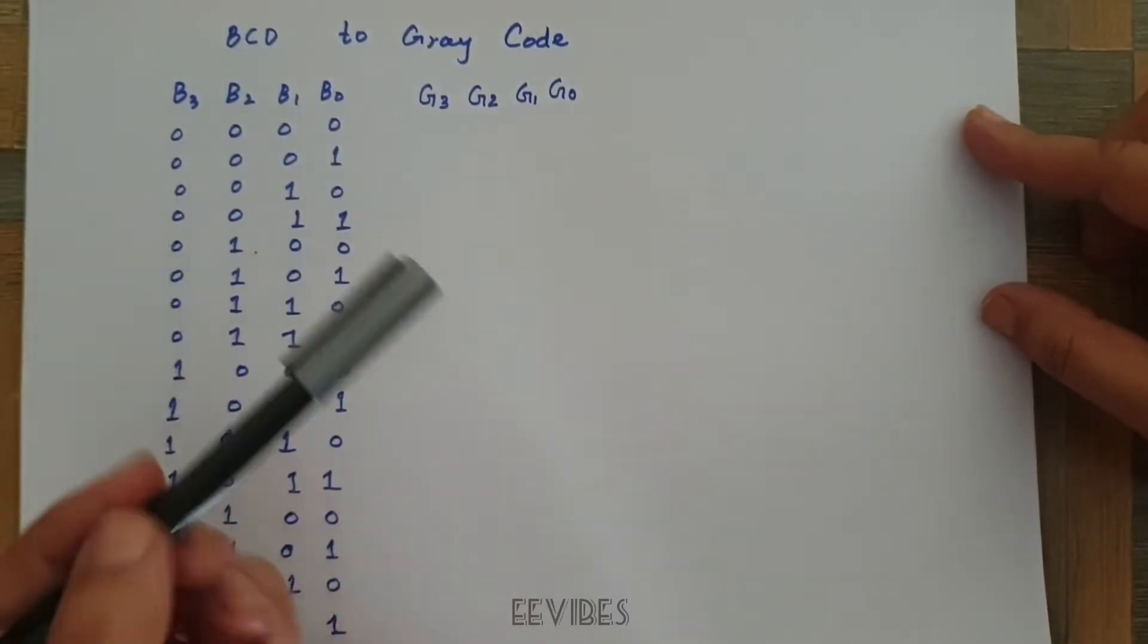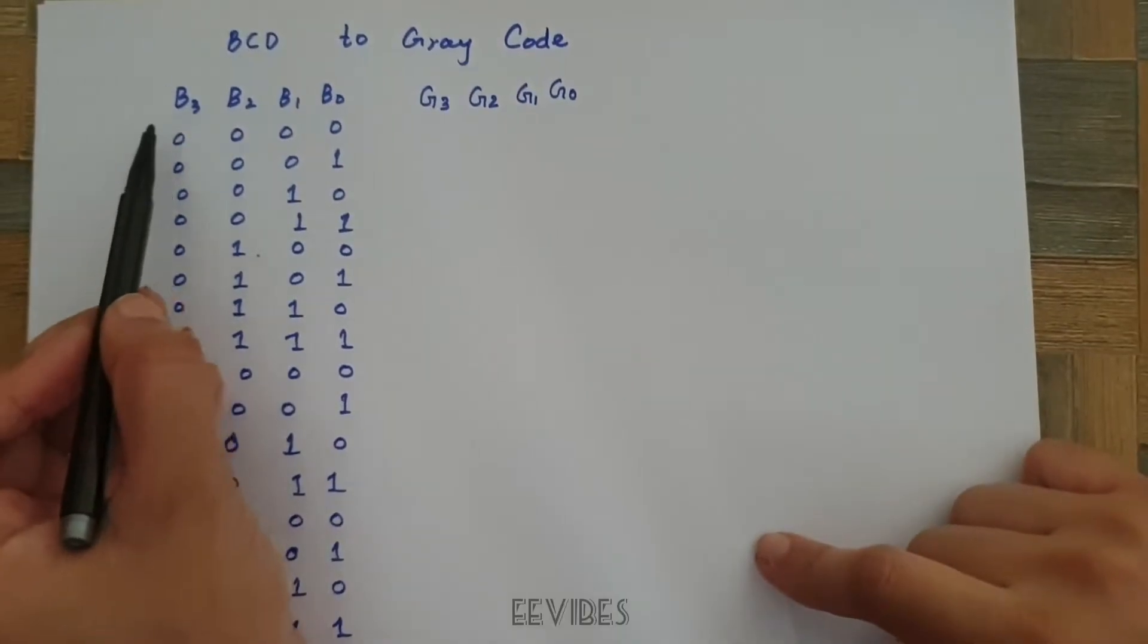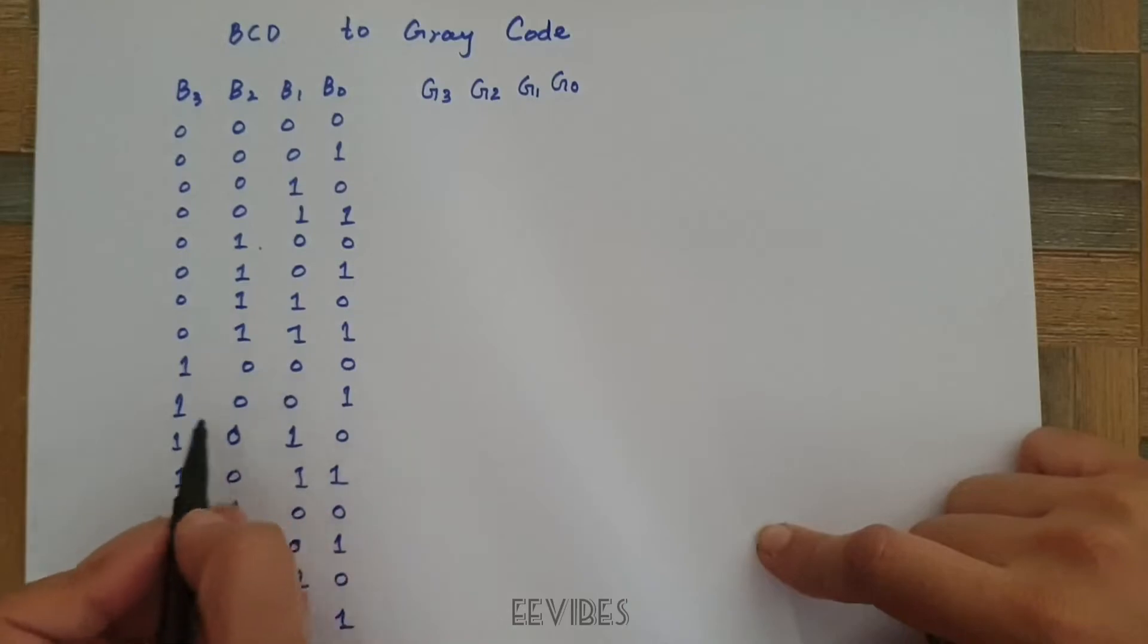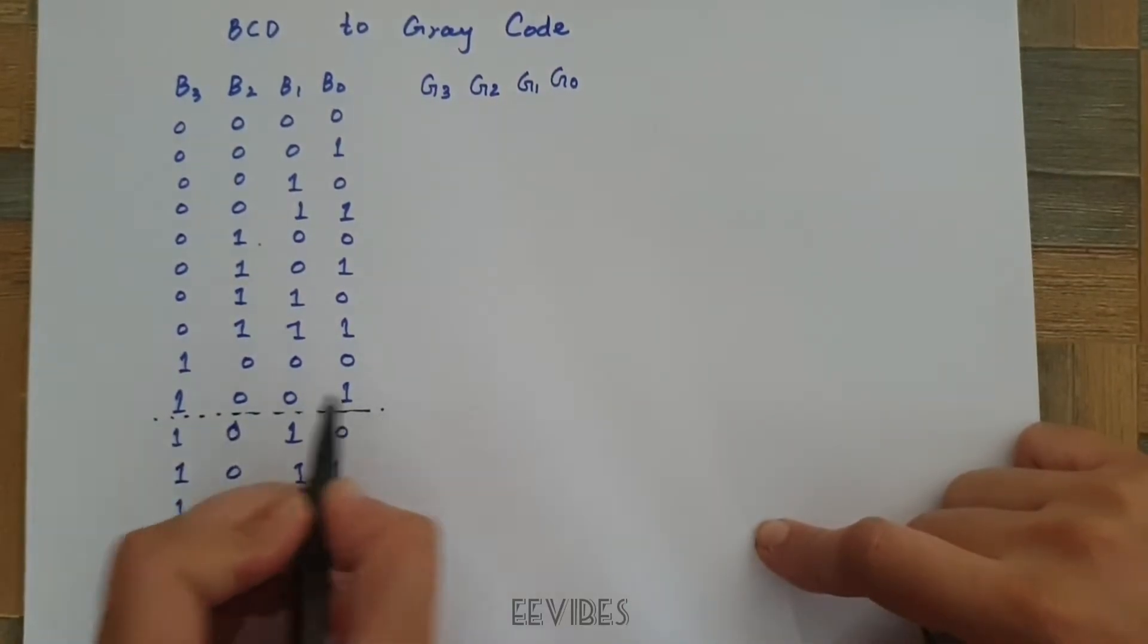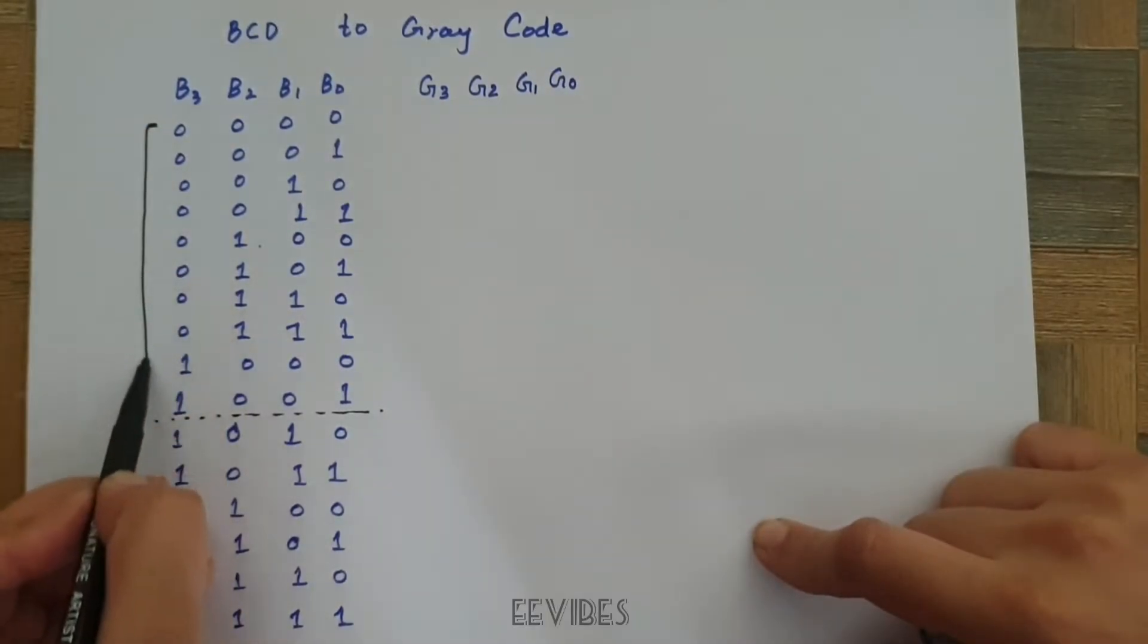You can see I have written all the possible 4-bit combinations for this, although BCD code only exists up to these combinations from 0 to 9.